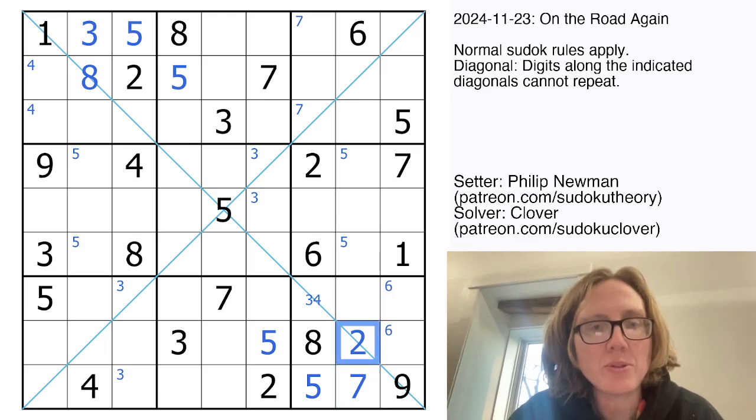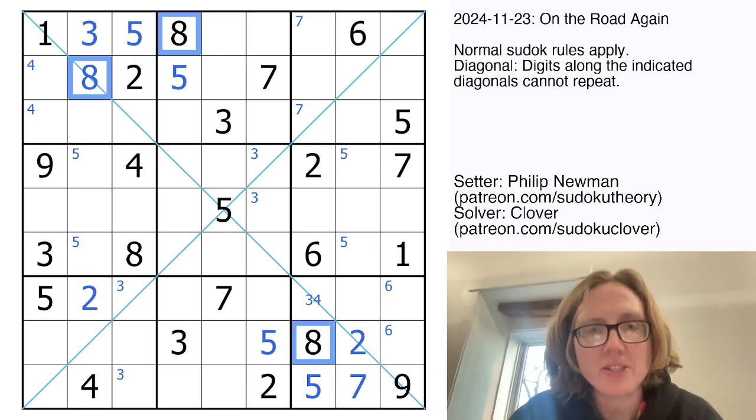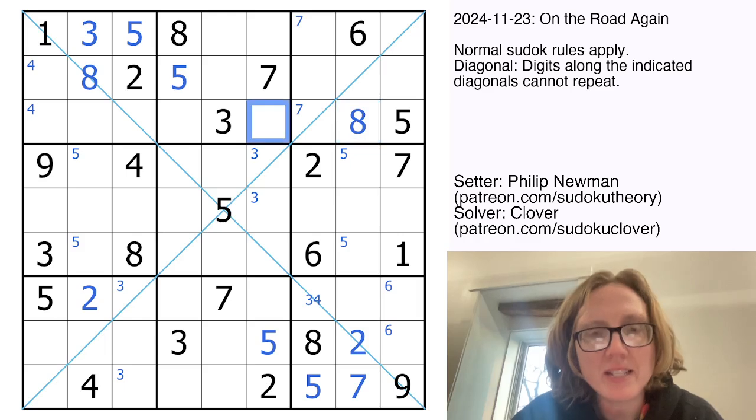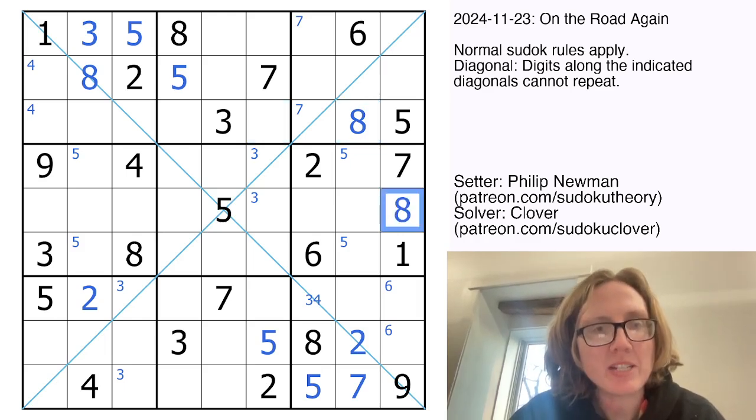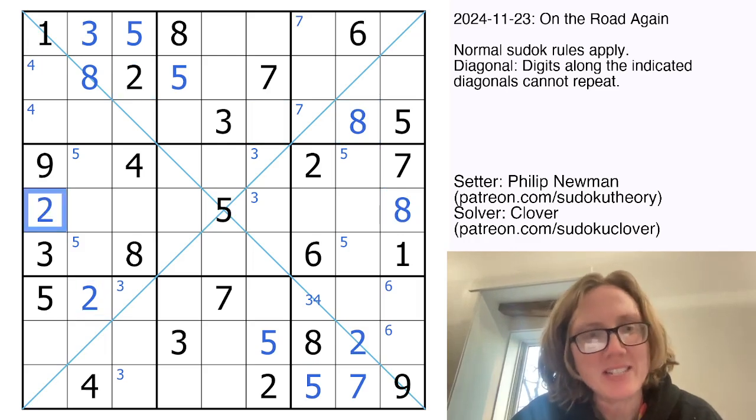And now I have two 2's here and here, and a 2 up here, so that tells me a 2 must go there. I have two 8's here and here, and an 8 down here, so that tells me 8 must go in that cell. Now by Sudoku, I have a hidden 8 in this region, and I'm probably, yep, I sure am going to have a hidden 2 in this region as well. Awesome.